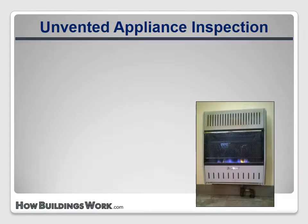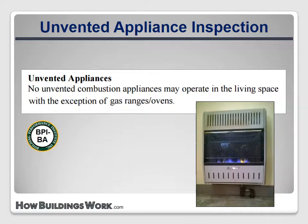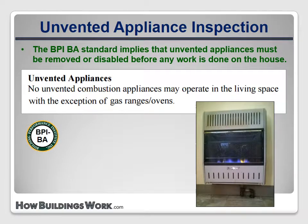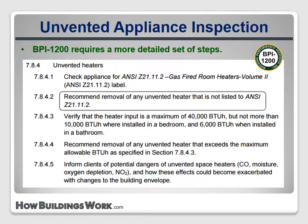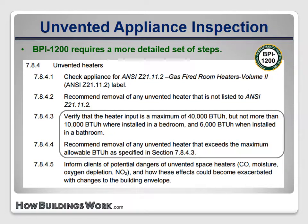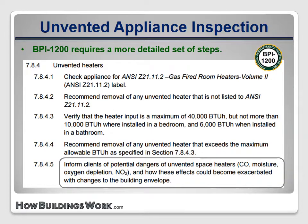BPI 1200 and the BA Standard address unvented heaters very differently. The BA Standard implies that these appliances must be removed or disabled if weatherization work will be done. BPI 1200 takes a more systematic approach — it requires recommendation of removal of any unvented heaters not listed to ANSI Z21.11.2, which requires an oxygen depletion system. It also requires recommendation of removal of models larger than 6,000 BTUs per hour in bathrooms, 10,000 BTUs per hour in bedrooms, and 40,000 BTUs per hour in other areas. BPI 1200 also requires that auditors inform clients of the potential dangers of these heaters and requires testing of them.